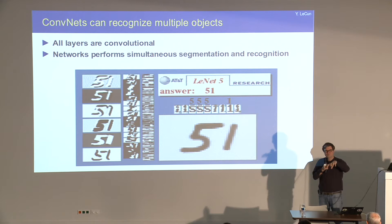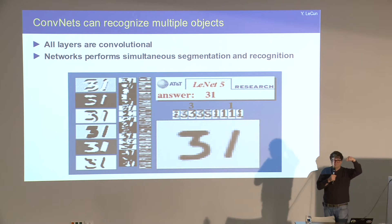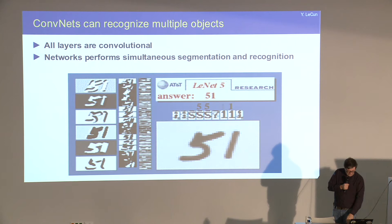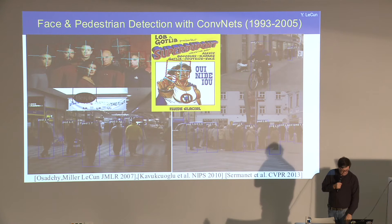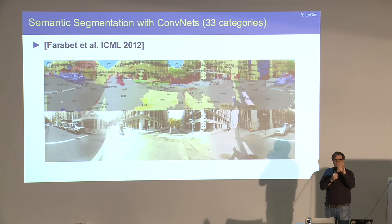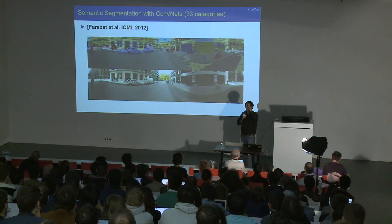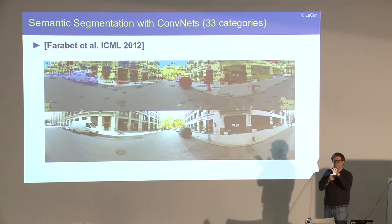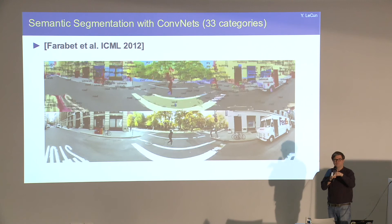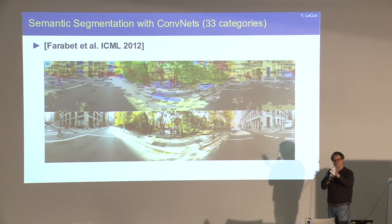You can apply a convolutional net locally to label every pixel in an image with the category of the object it belongs to. Each output has a large contextual window of influence on the input, so to decide the category of a single pixel, the network looks at a wide contextual window around it. This is done convolutionally, making it very efficient. A system built about 10 years ago could run at 30 frames per second on an FPGA. Around 2012-2013, these networks started beating other methods by a large margin, largely due to bigger datasets like ImageNet and the availability of GPUs.